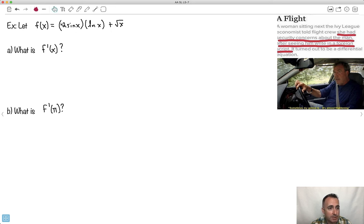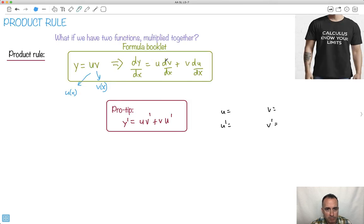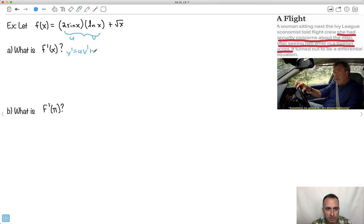Anyway, let's take a look at this. So let f(x) = 2sin(x) · ln(x) + √x. Now let's first work on just this piece right here. Let's just work on that one. But don't forget, we're still going to have this one to do. This one here is going to be u, this one here is going to be v.